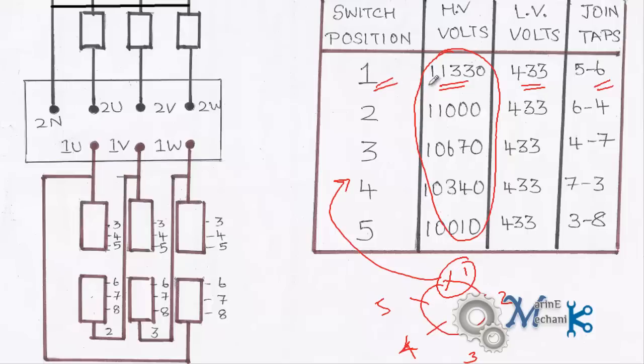At position 1 we have 11,330 volts. Position 2, we have 11,000. Position 3, we have 10,670. Position 4, 10,340. Position 5, 10,010 volts. However, what you have to note is on the LV side the voltage is constant, that is just 433 volts. There is no change in it. One more thing you have to note is the joint tap position. Let's say you want 11,330 volts on the primary side and you are choosing position number 1.